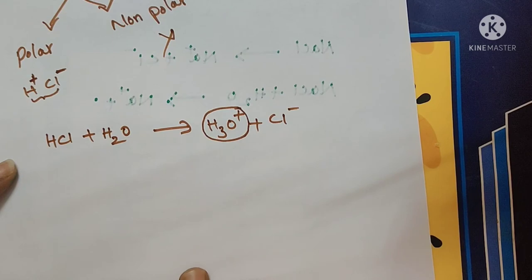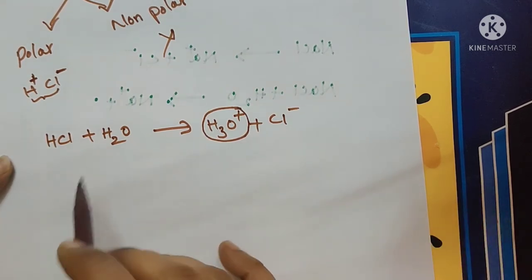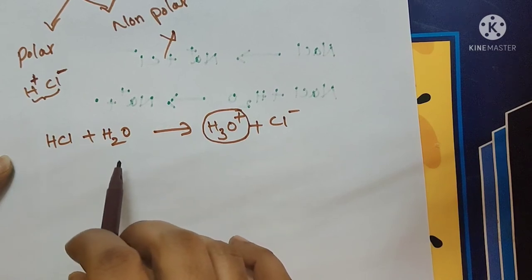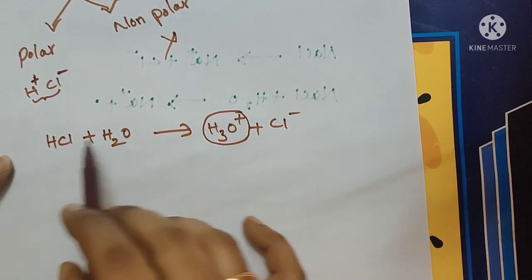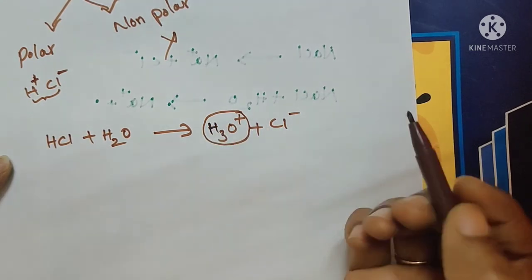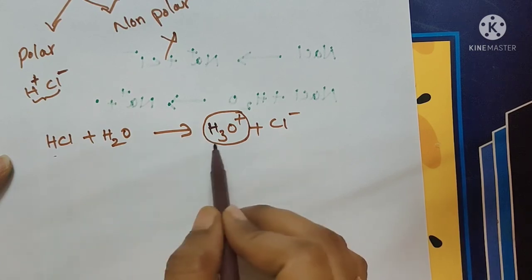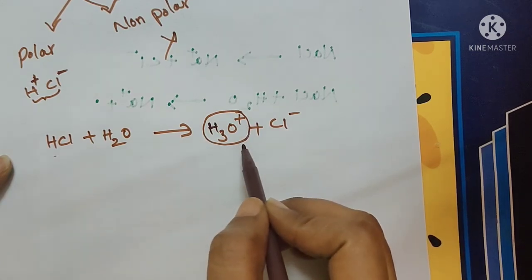In the case of dissociation, we cannot see any new ions, but in the presence of ionization, we can see that new ions are formed. In the case of ionization, here when the HCl dissolves in water, the H3O plus ion is formed.